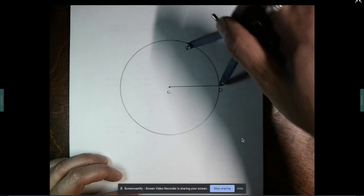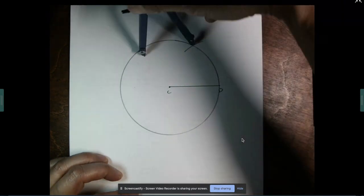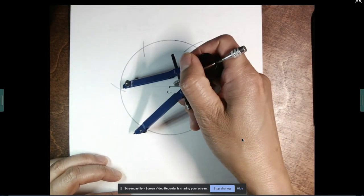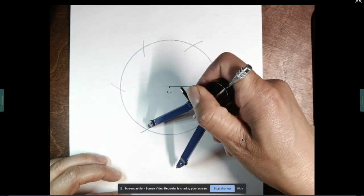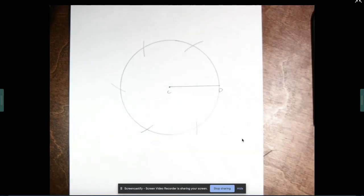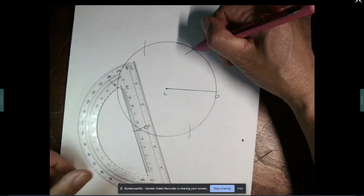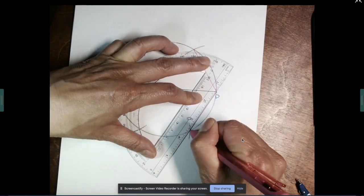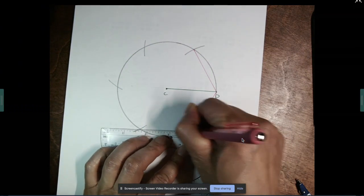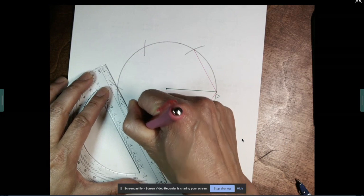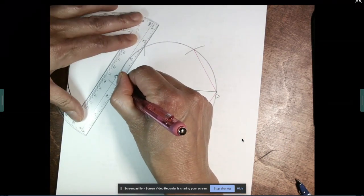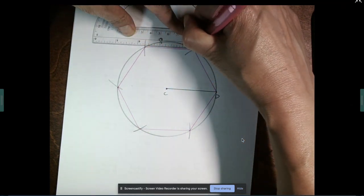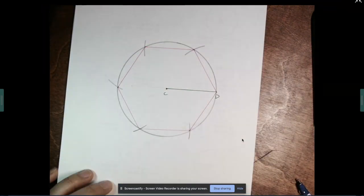Go to point D. Chop off the circle. And then just chop off the circle five times. And do you see your regular hexagon? There you have it.